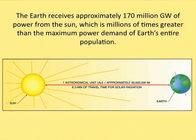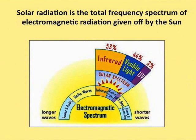Lots of sunlight comes to the earth — way more energy than we have any need for, so clearly the motivation is there to take advantage of solar energy. Sunlight comes in a lot of different wavelengths: we get infrared, UV, and some other frequencies beyond that. We have a lot of infrared heat energy to take advantage of.